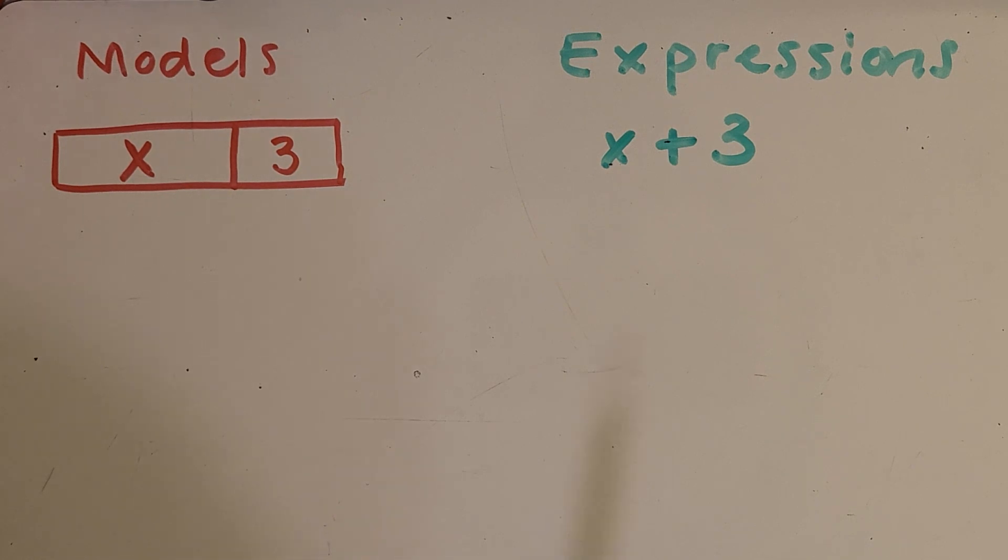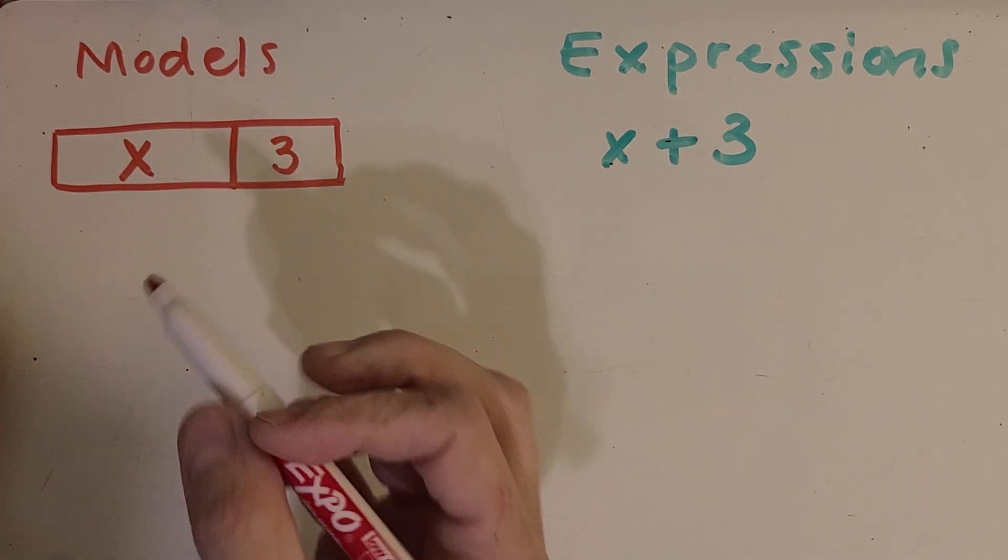Some of you might have thought, well, these are next to each other, so it looks like we're adding and you are right. The expression for this could be X plus three. We're just writing an expression with that unknown amount, that letter, and then plus the amount that we do know.